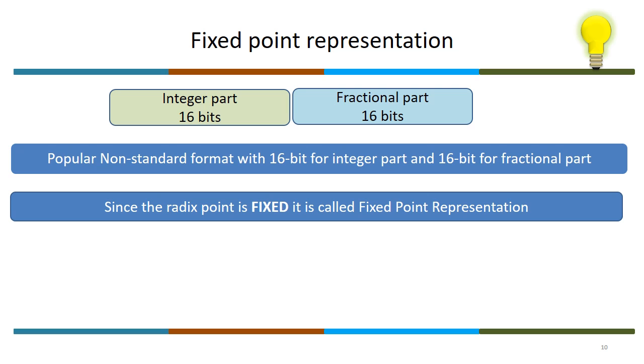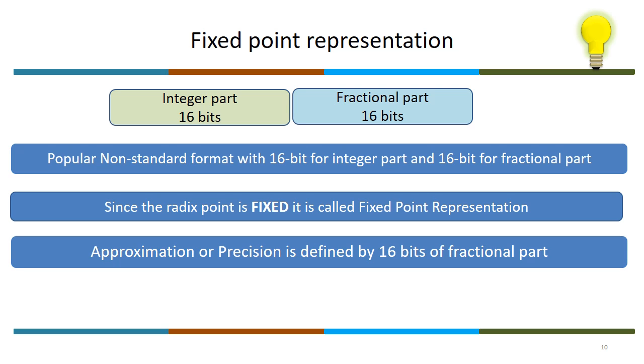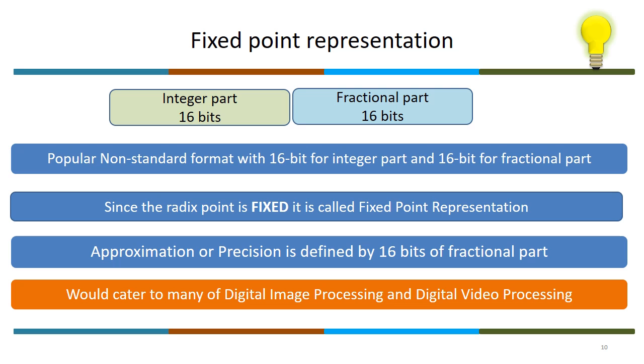Since the radix point is fixed, it is called fixed point representation. The most important thing is the precision is defined by 16 bits of fractional part. This would cater to many of the digital image processing and digital video processing applications. Most of the earlier Texas Instruments DSP core processors would implement their MAC unit with fixed point representations, predominantly for high precision number crunching. It was dominating because of ease of implementation and the demand from applications like digital image processing and video processing.